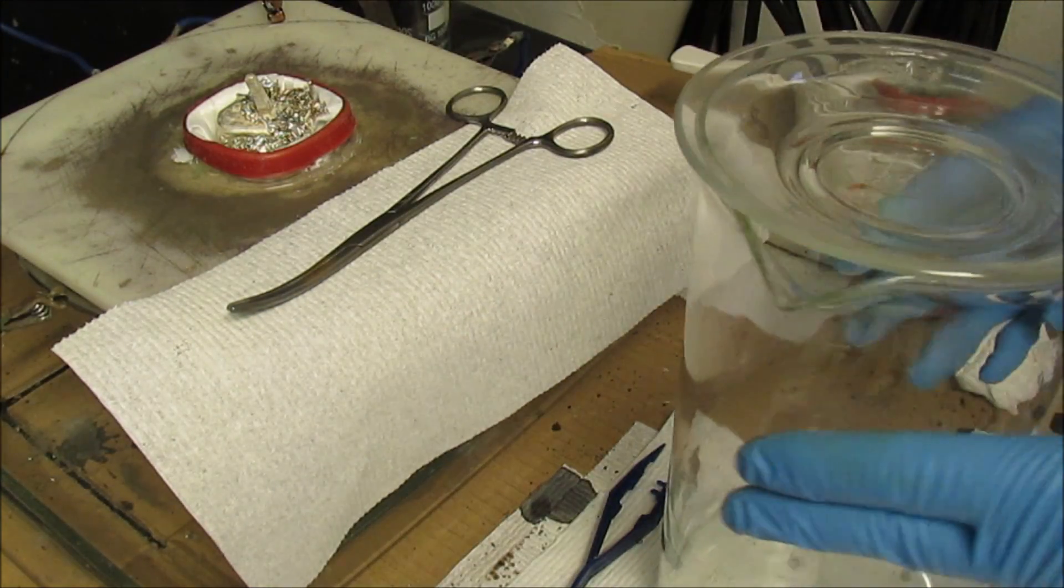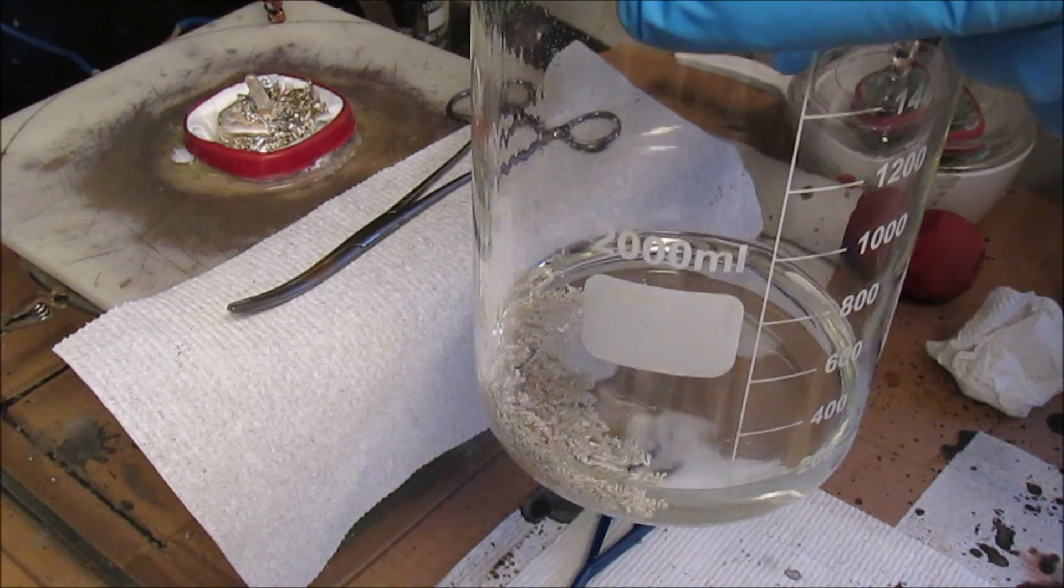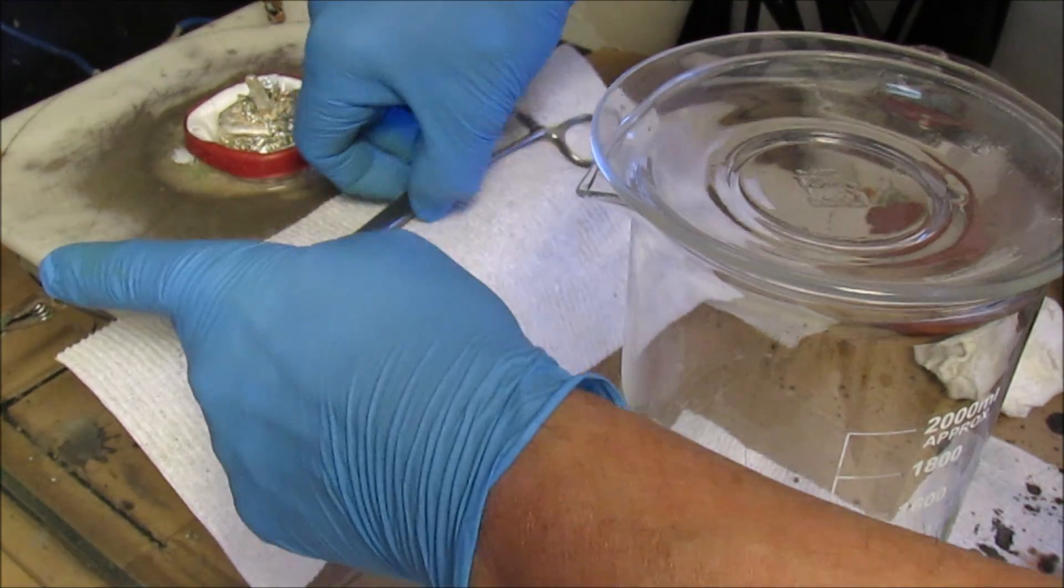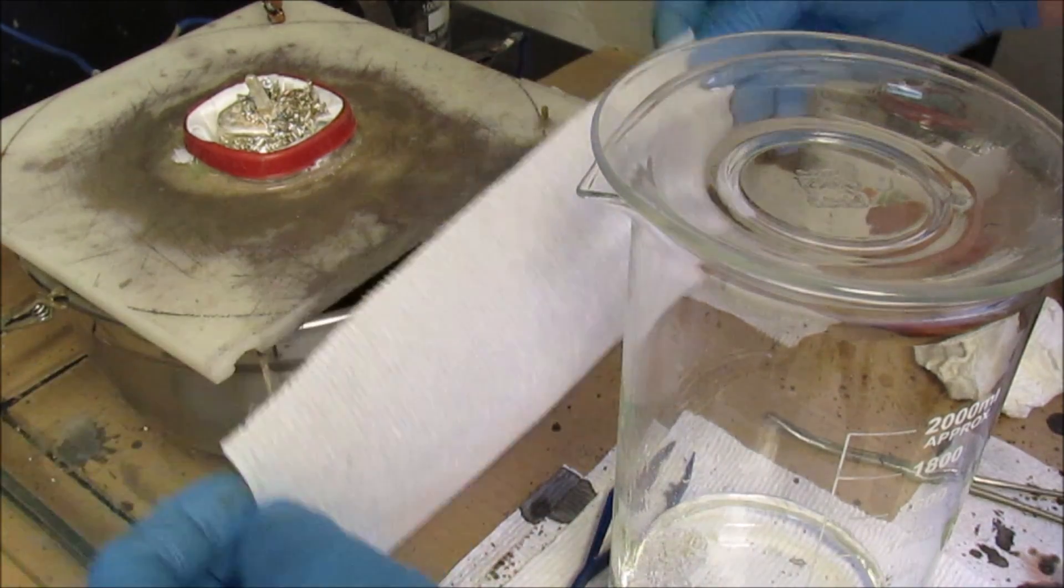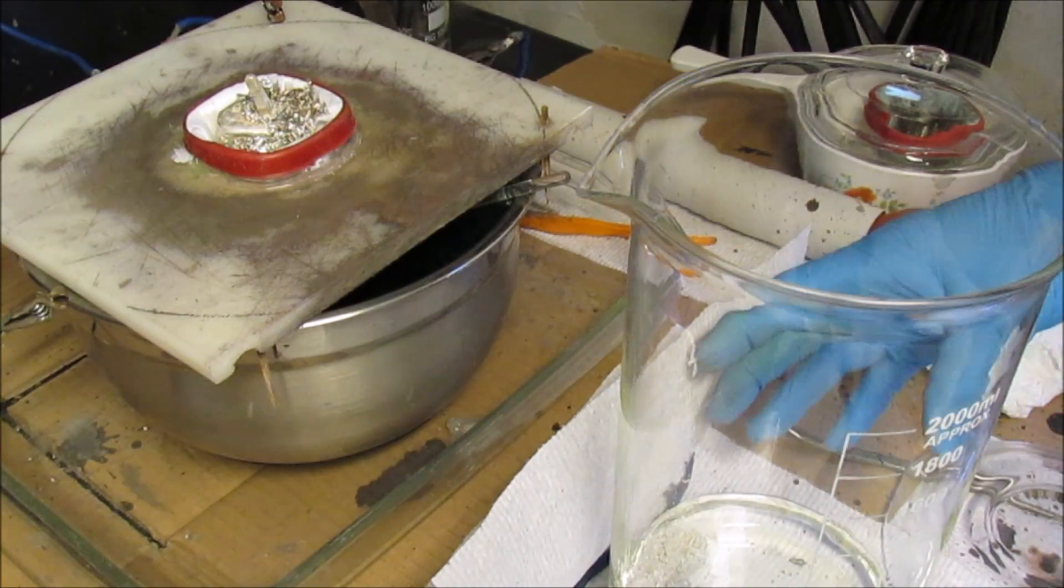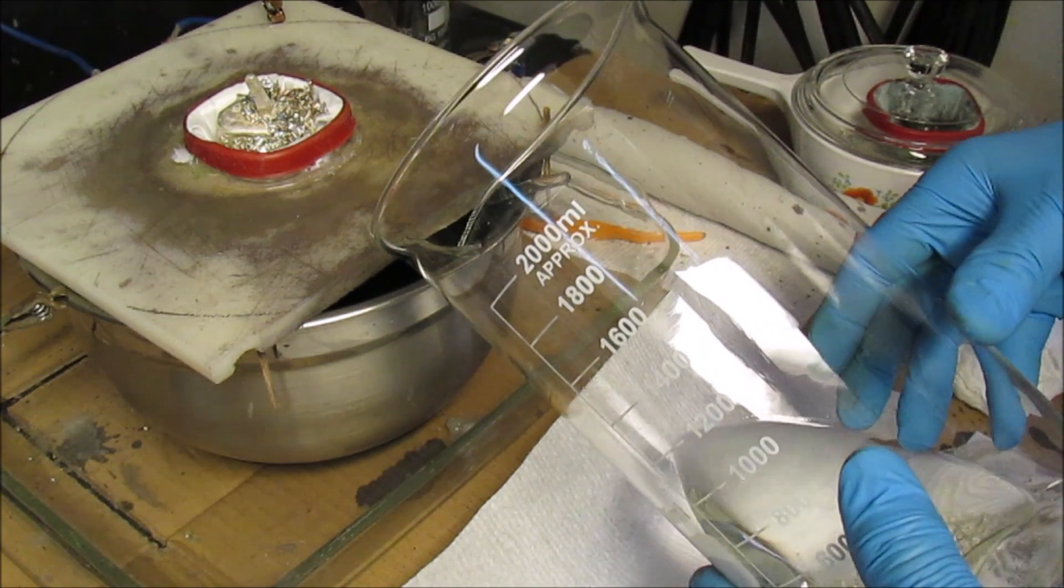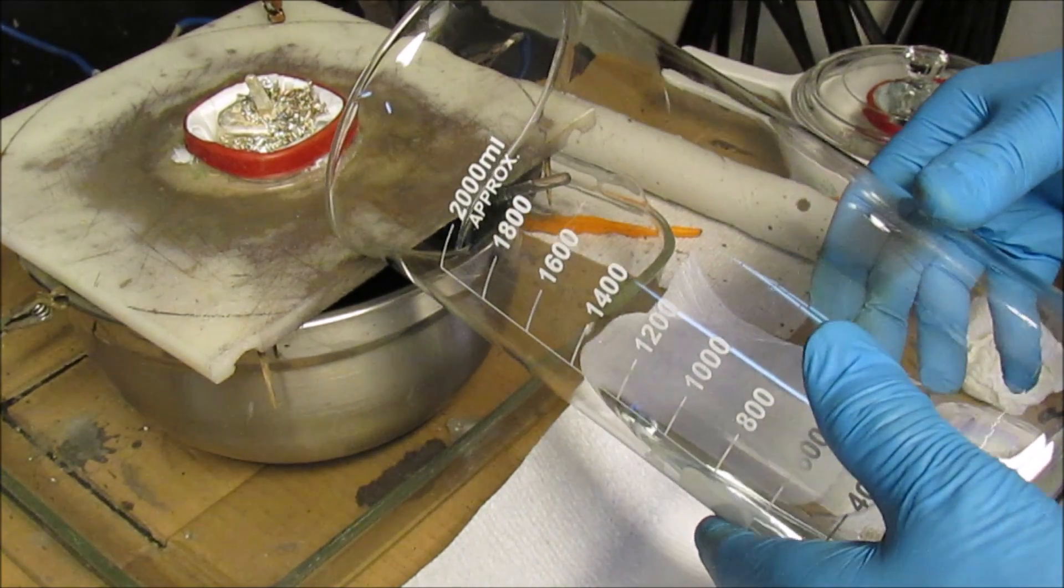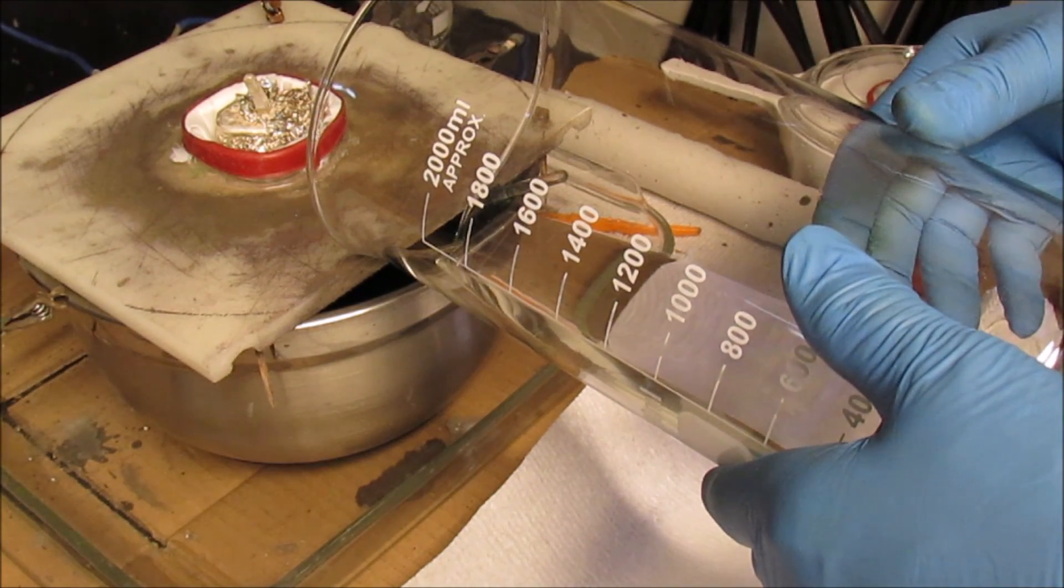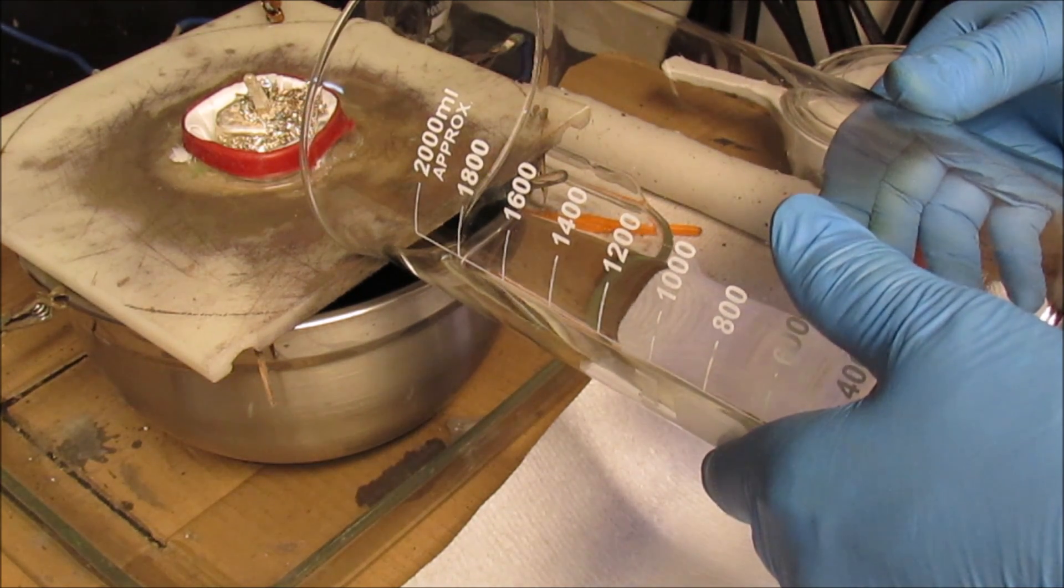In this beaker I've got some silver that I dissolved with dilute nitric acid. What I'm going to do is as the silver cell operates the electrolyte level will decrease due to evaporation, so I'm going to augment the silver concentration of the cell by adding more dissolved silver and increase the electrolyte level to restore it to where I originally started.